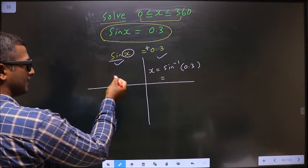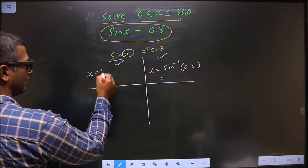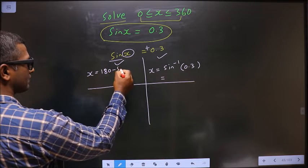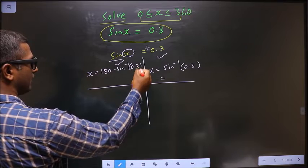To get an angle in the second quadrant, we do 180 minus sin inverse 0.3.